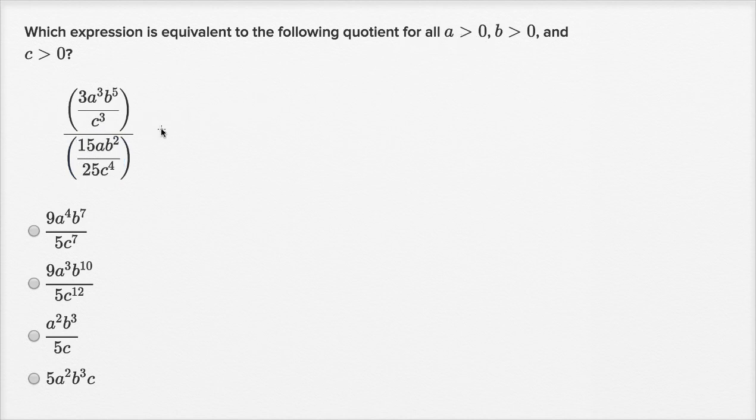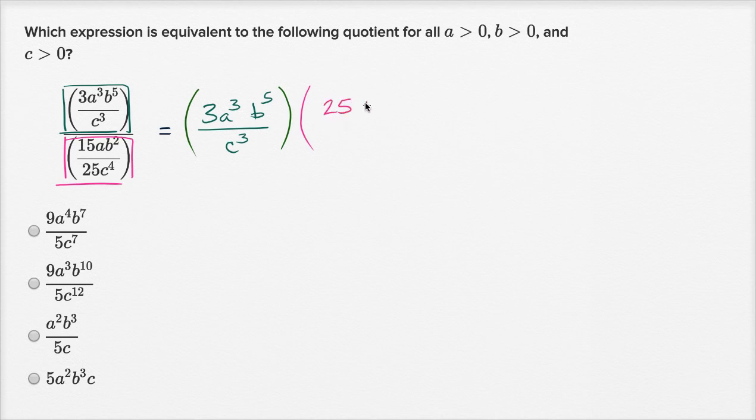But let's see if we can simplify it. We just have to remember, dividing by a fraction is equivalent to multiplying by its reciprocal. So this is going to be the same thing as this top expression - let me color code it - three a to the third b to the fifth over c to the third, times the reciprocal of this business right over here. So 25c to the fourth power over 15ab squared.